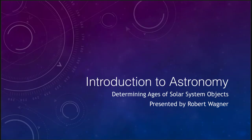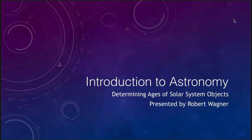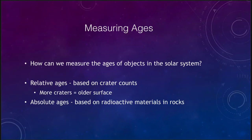Greetings and welcome to the introduction to astronomy. In this lecture we are going to discuss determining ages of solar system objects. So how do we figure out how old something is in the solar system? There are a couple of ways that we can do this, and we can look at two things that we call either the relative age or the absolute ages, or the true age.